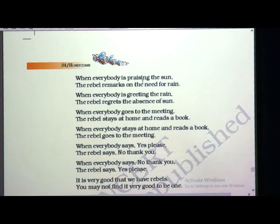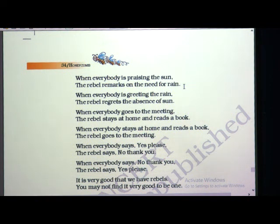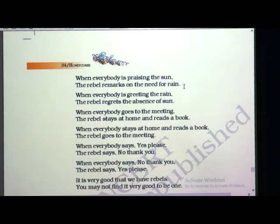When everybody is praising the sun, the rebel remarks on the need for rain. If everyone says the sun is very good and helpful — it gives sunlight, warmth in winter, helps dry clothes, can be used for solar electricity — the rebel will not accompany you. He will not say sun is not useful, but he will not talk about the sun either. Instead, the rebel remarks on the need for rain.